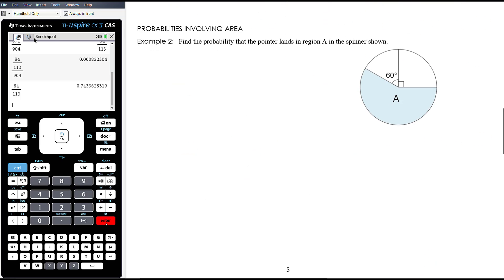Alright, probabilities involving area. So these would be theoretical probabilities, we can calculate precise probabilities. Find the probability that a pointer lands in region A in the spinner shown. So we essentially want to work out, the probability that the spinner will land in region A is the area of A over the total area of the spinner.